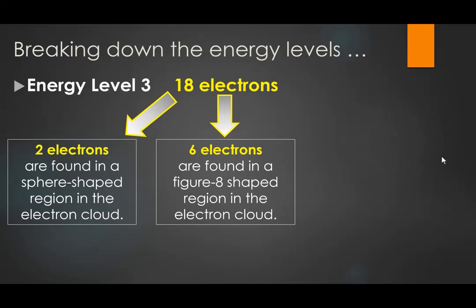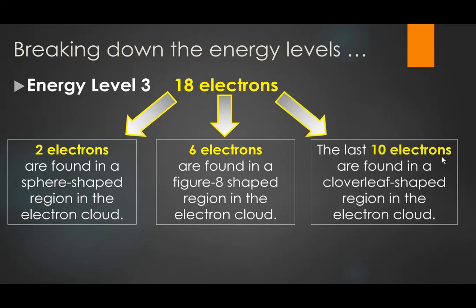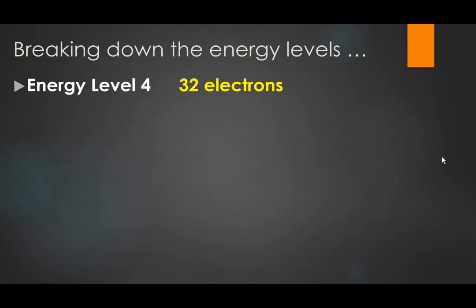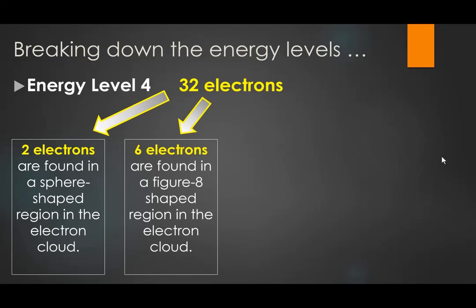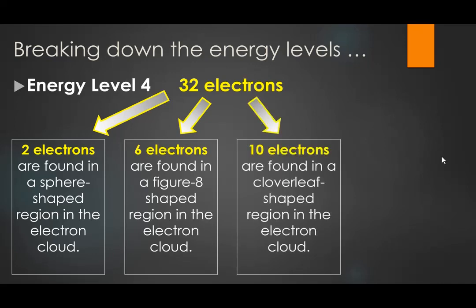So we have 3 different shapes: spheres, figure-8s, and cloverleafs — all three-dimensional. For level 4, there are 2 electrons in a sphere, 6 in a figure-8-shaped region, and 10 in a cloverleaf-shaped region. They're all similar in shape to those in earlier levels, just bigger and further out from the nucleus.